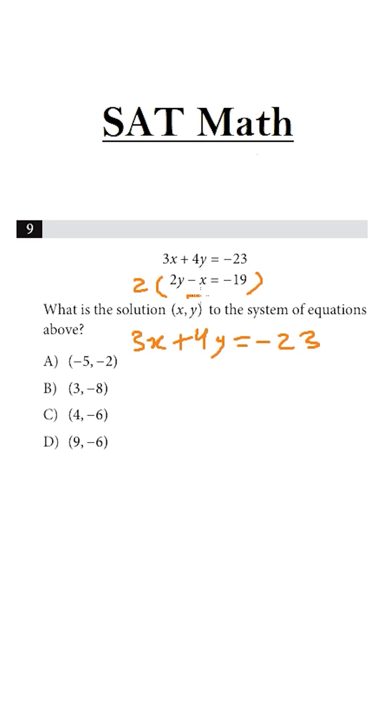So first we write this minus x times 2 is minus 2x. Then we have this 2y times 2 is 4y is equal to minus 19 times 2 is minus 38.